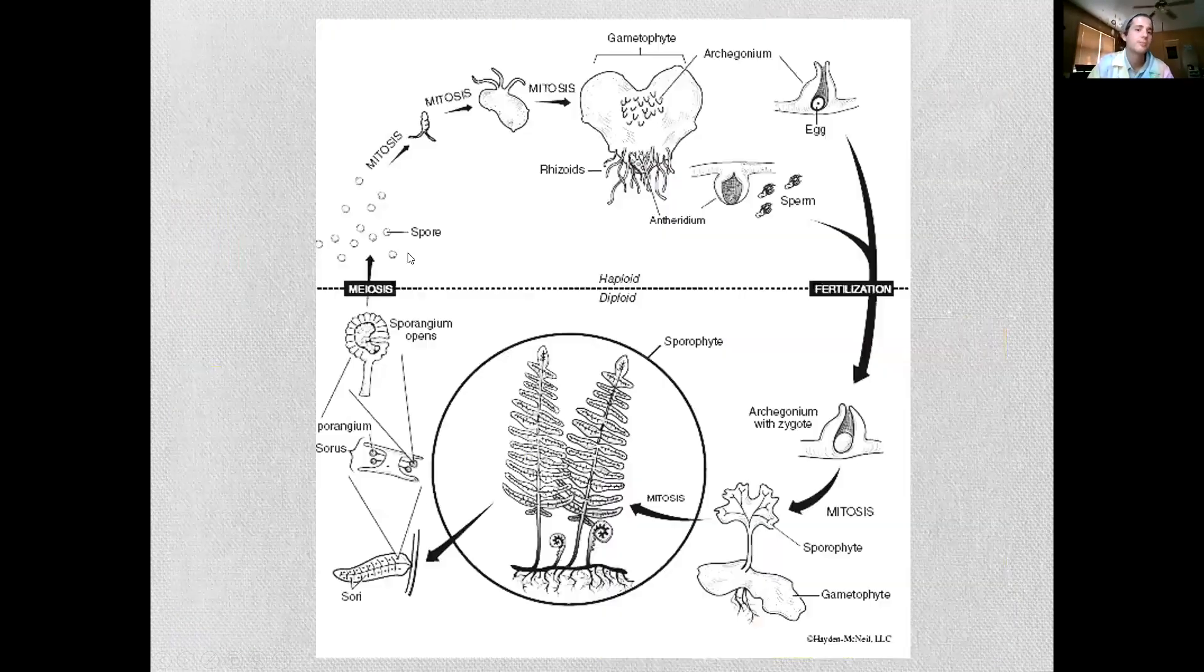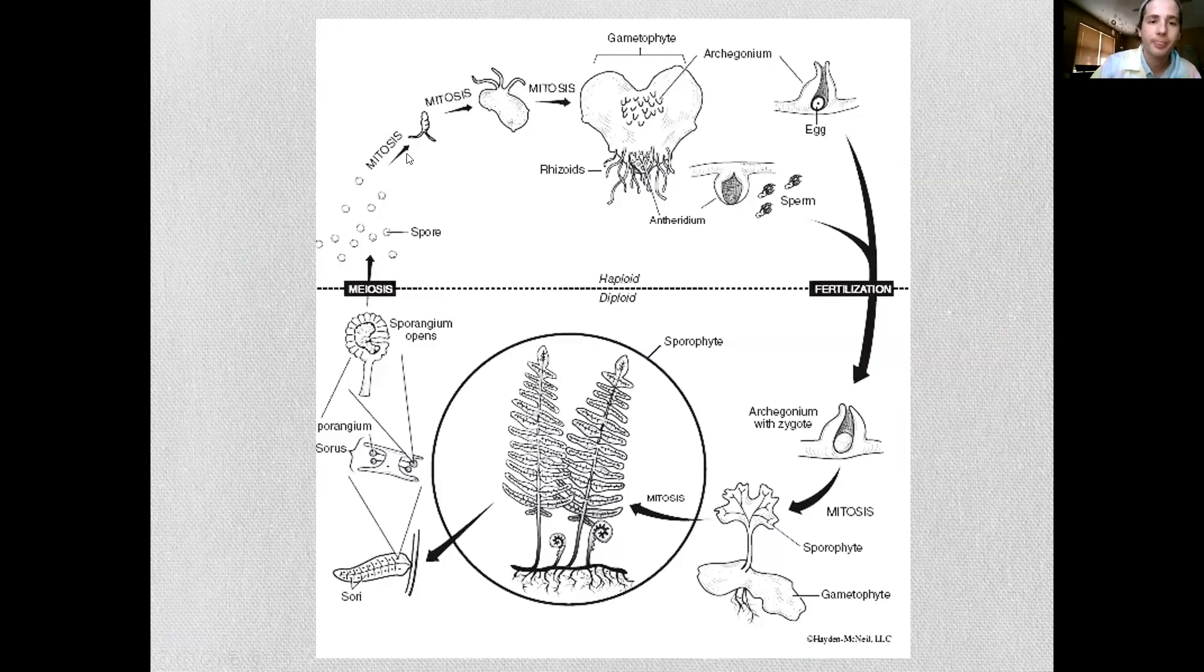So let's go ahead and look at that. We start with a spore released from one of these sporangium and undergoes mitosis. It produces a gametophyte, a little heart-shaped structure.